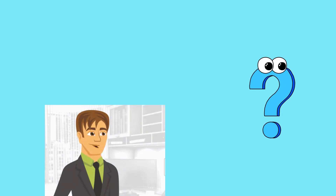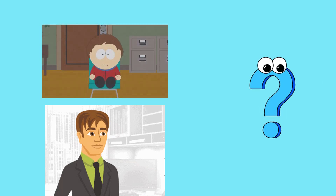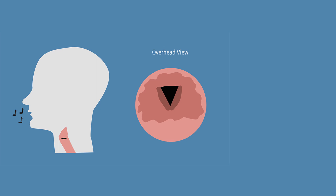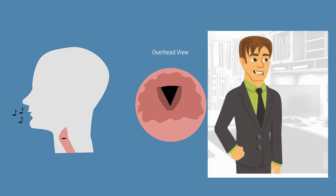Now I have a question: why does an adult's voice have a lower pitch than a child's voice? What happens to our vocal cords as we grow older? The answer is our vocal cords grow longer and thicker as we grow into adults, so our vocal cords vibrate slower when we become adults. Thus, an adult's voice has a lower pitch than a child's voice.